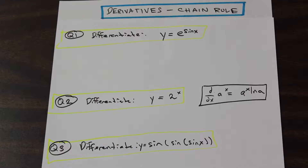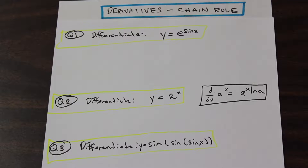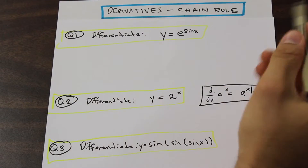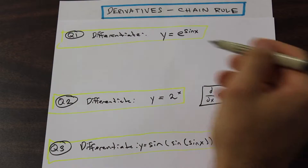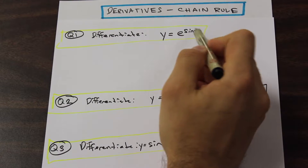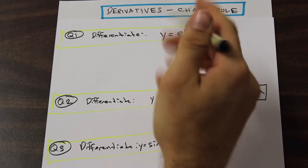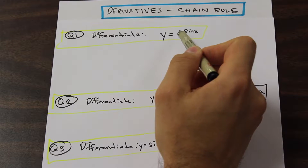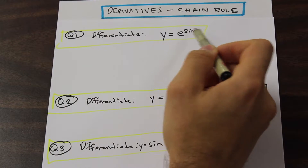So let's look at question one. We're asked to differentiate y equals e to the sine x. That looks a little bit tricky — e to the power of sine x. Whenever you see a question like this, with e to a function of x, in this case trigonometric, when we're dealing with the chain rule we're always looking for the inner function. In this case, we don't really have a bracketed function, so the inner function is going to be sine x.